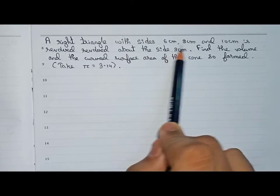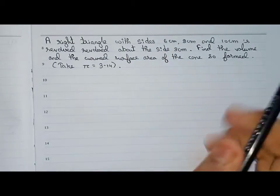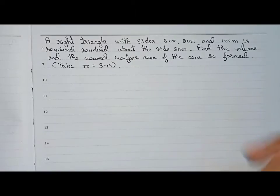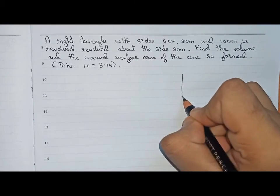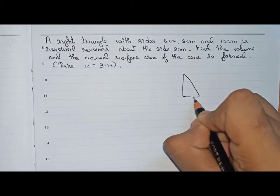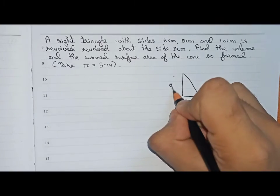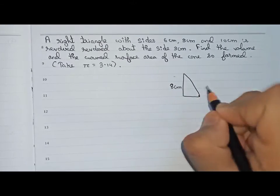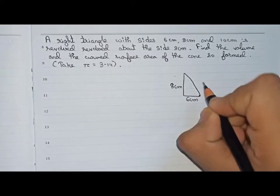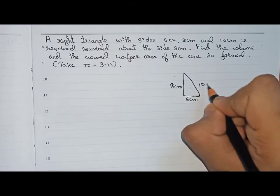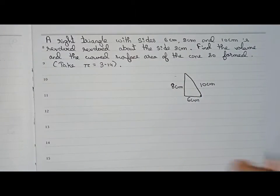First, it is given that we have a right triangle with sides 6 centimeter, 8 centimeter, and 10 centimeter. If we draw the right triangle, this side is 8 centimeter, this side is 6 centimeter, and the hypotenuse will be 10 centimeter.